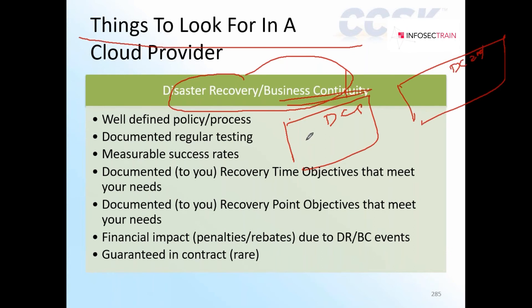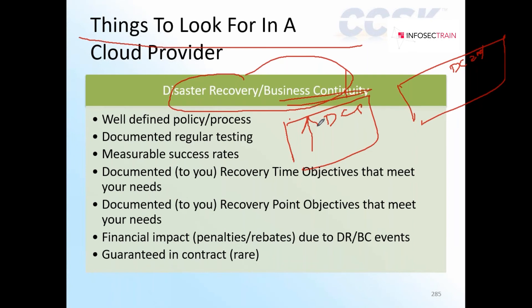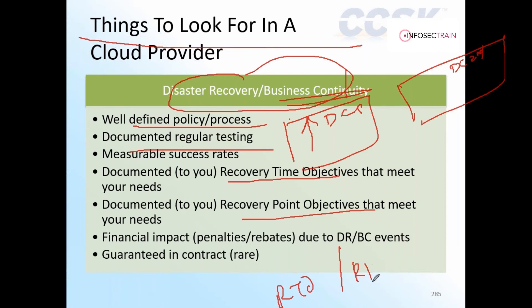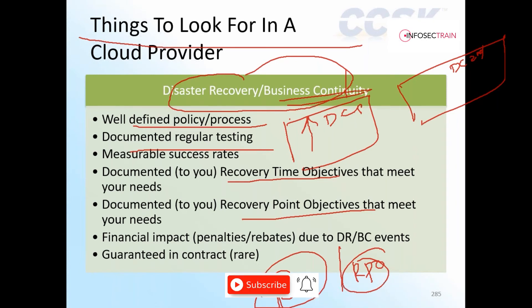Currently my customers are being served from data center one. If data center one goes down, I have to make sure operations continue from data center two — that is business continuity. Disaster recovery means how much time or effort it takes to bring back the primary data center to operation. There must be a proper, well-defined process for that, it must be documented and tested. Two important terms: RTO (Recovery Time Objective) and RPO (Recovery Point Objective). RTO means how much time it takes to bring something back to operation.